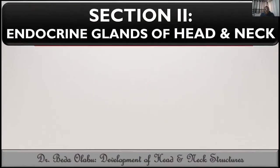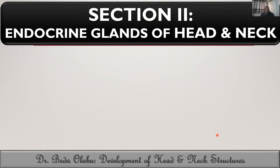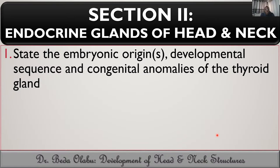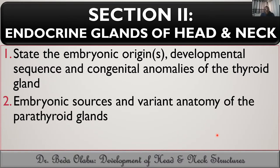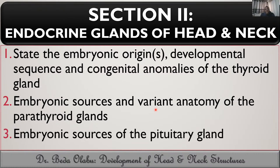In the third part of the lecture series we focus on development of facial structures including the palate and the tongue. In the last part we look at development of the eye and the ear. In this lecture on development of endocrine glands of the head and neck, we will address three major objectives: embryonic origins, developmental sequence, and congenital malformations of the thyroid; embryonic sources and variant anatomy of the parathyroid; and embryonic sources of the pituitary gland.